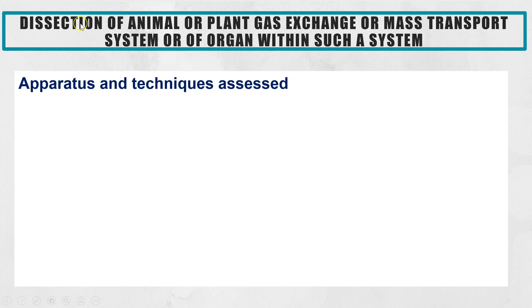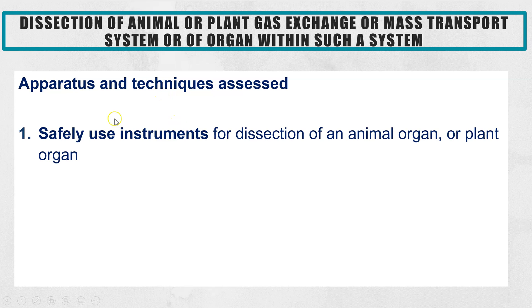It's the dissection of either an animal or plant gas exchange or mass transport organ. I'm going to go through this looking at a sheep's heart, but you may have been given lungs, a fish head, or even parts of a plant. The ideas behind the apparatus and techniques will be applicable to all of them. The skills being tested are: can you safely use instruments needed for a dissection?